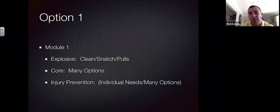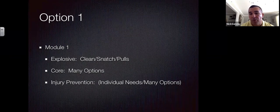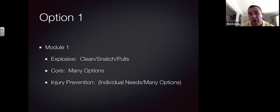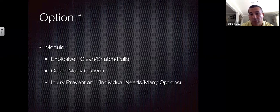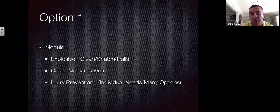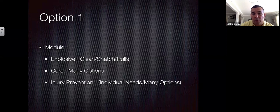Option one examples: explosive movements include cleans, snatch pulls, and box jumps since you have the facility. For core, I give athletes choices based on plane — on a sagittal day, an ab wheel, slam, crunch, V-up, or sit-up. I give them options because I don't always know exactly what they have. Injury prevention is individualized — a Cuban press, single leg squat, and similar movements.